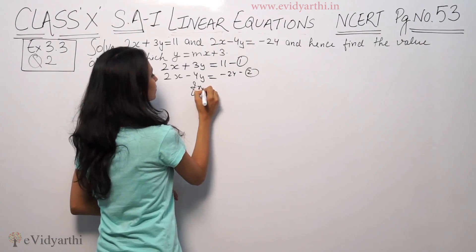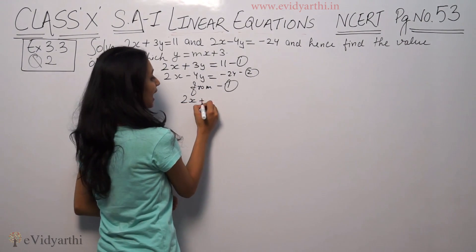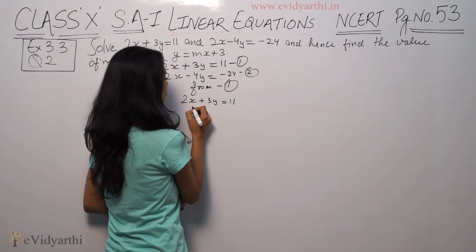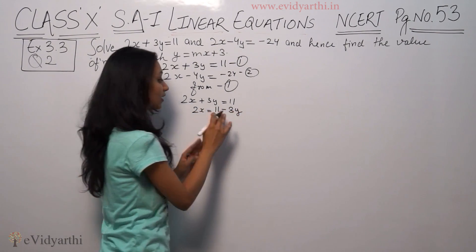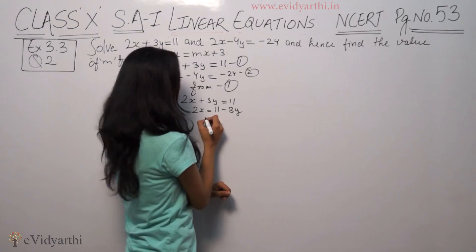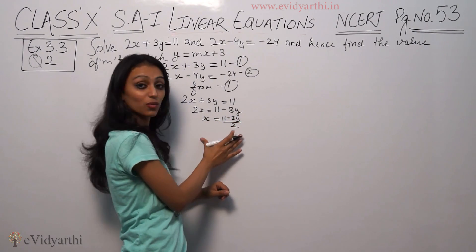From first, if we have 2x equals 11 minus 3y, so x equals 11 minus 3y upon 2. This is the value of x.